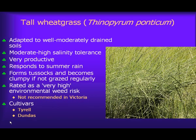Tall wheatgrass is another commonly used species in saline areas. It has quite good salinity tolerance but doesn't have the waterlogging tolerance that Puccinellia has. It is a very productive grass that responds to summer rain, but it does form tussocks and can become quite clumpy if not managed well. In Victoria in particular it has been rated as a very high environmental weed risk. Terril is the oldest cultivar, whereas Dundas is a more recent release.